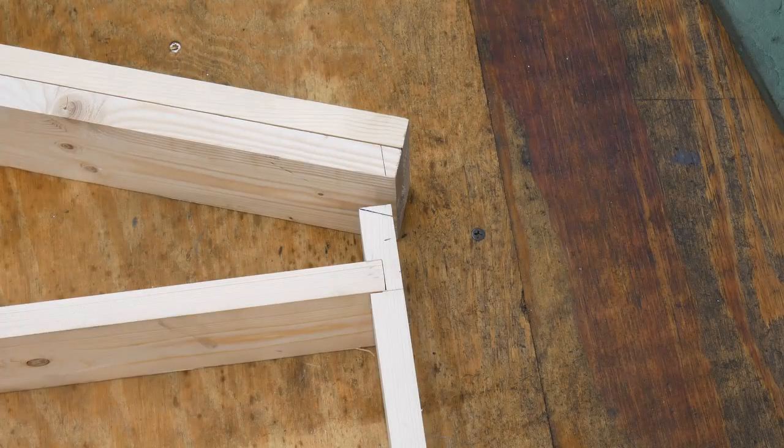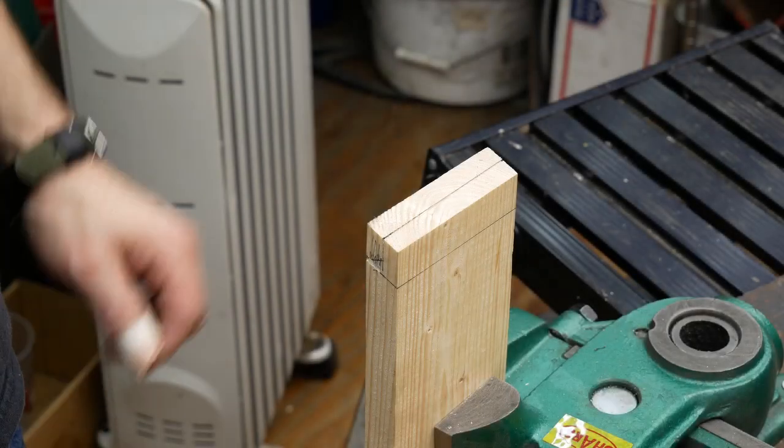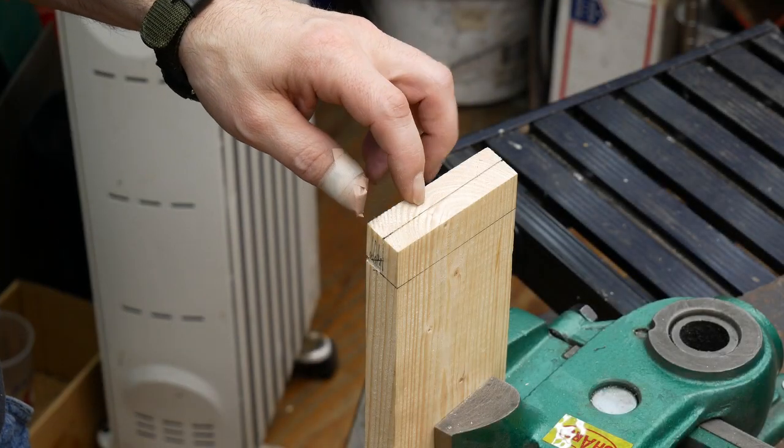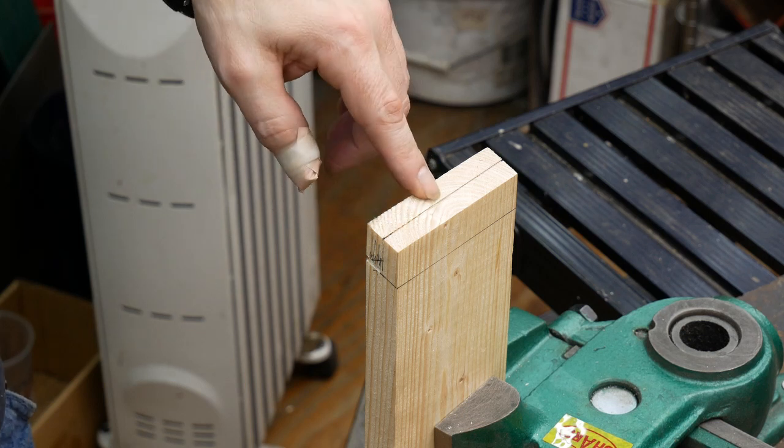I've got my angles established right there, you can see the lines and that's my cut marks. Eight total cuts. This is what's pretty much left of the joinery.